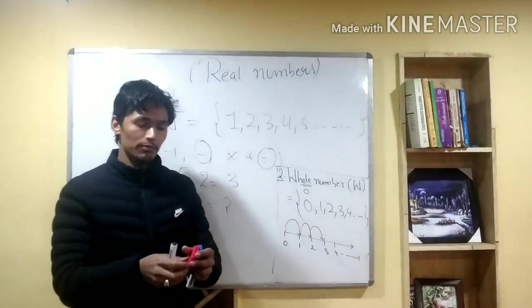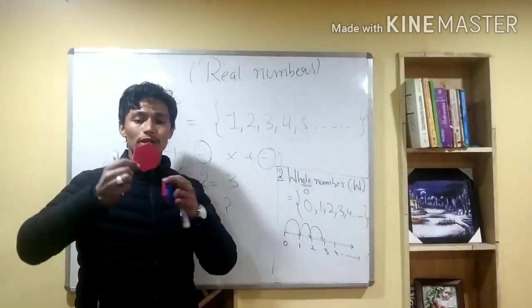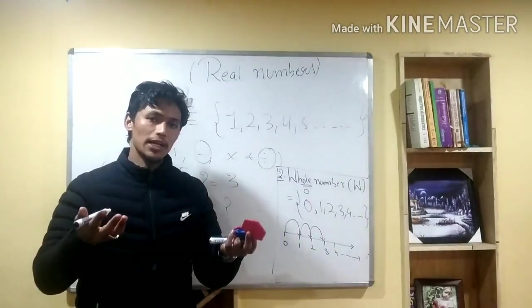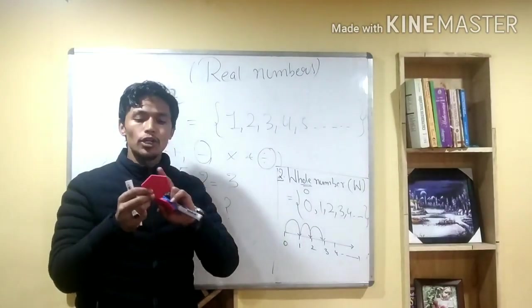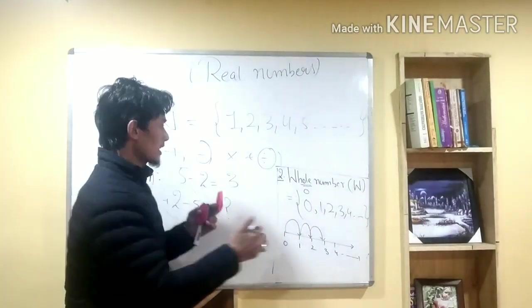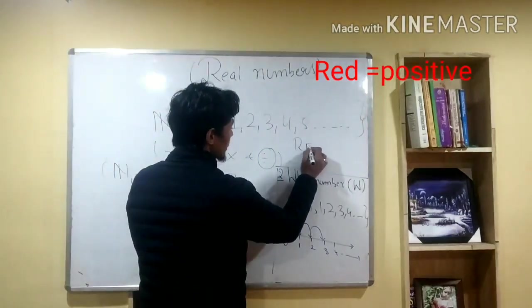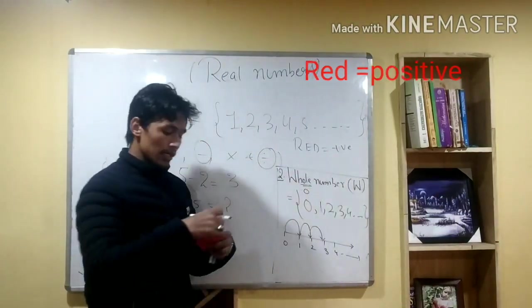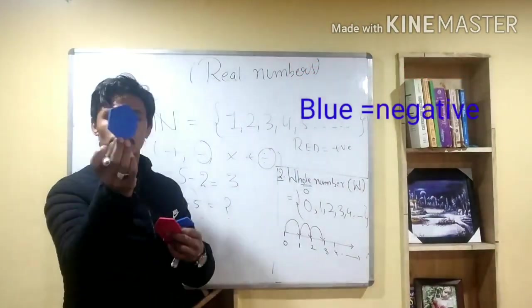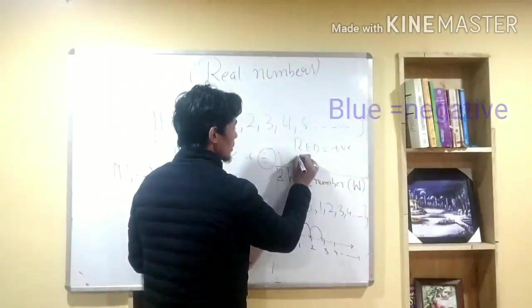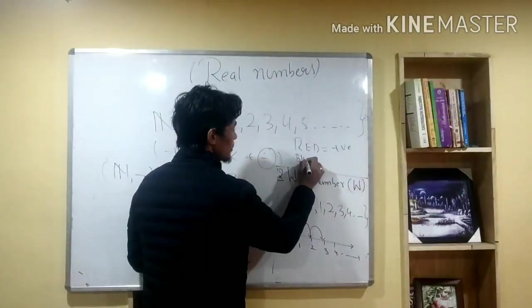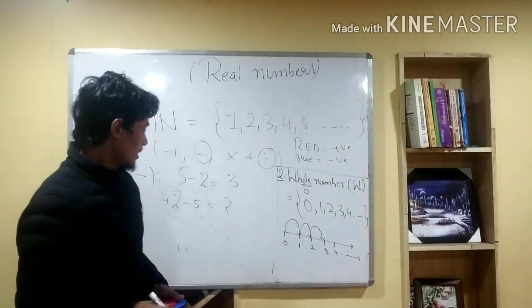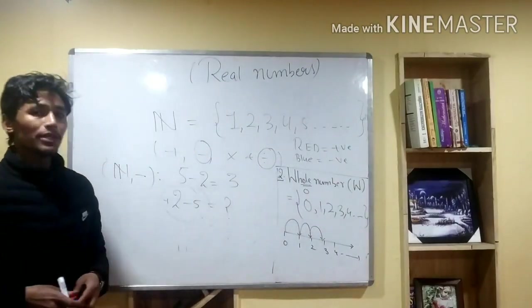So we need negative numbers. To represent them, we use color. If you look at the red color, red plus is positive. So red means positive. Blue color is negative.